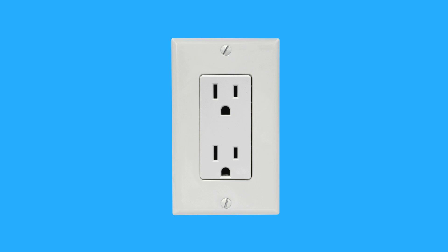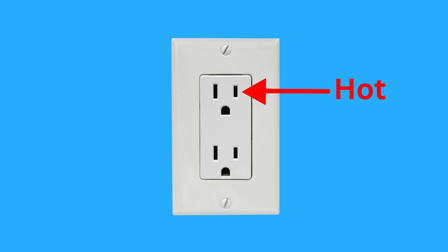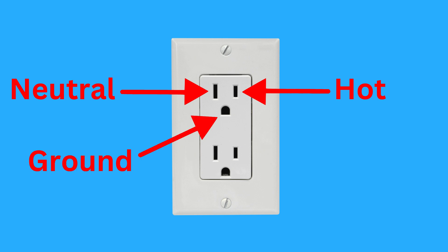The typical US electrical outlet has three conductors within the electric cable. Hot is the black wire supplying the 120-volt AC power source. The neutral is the white wire, which provides the return path for the current supplied by the hot wire and is connected to an earth ground. The ground wire, either green or bare copper, is also connected to an earth ground.